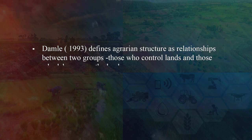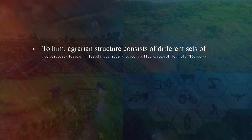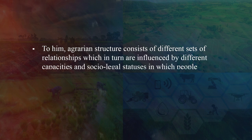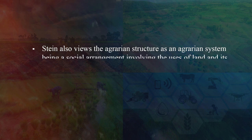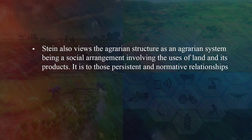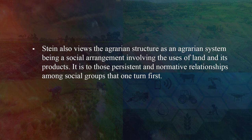Damley (1993) defines agrarian structure as relationships between two groups: those who control lands and those who labor or use the land. To him, agrarian structure consists of different sets of relationships which in turn are influenced by the different capacities and socio-legal statuses in which people function in relation to cultivable land. Steyn also views agrarian structure as a social arrangement involving the uses of land and its products, pointing to pertinent and normative relationships among social groups.